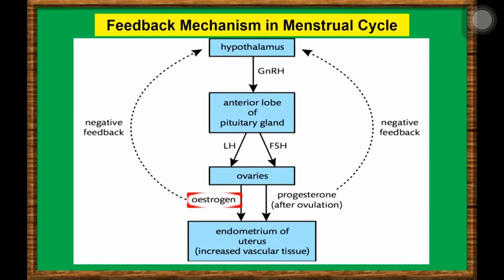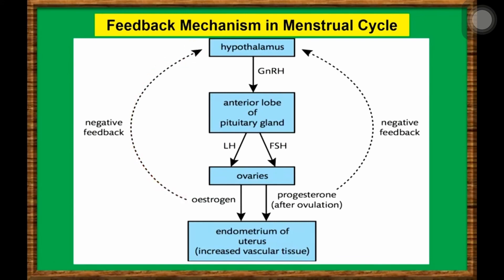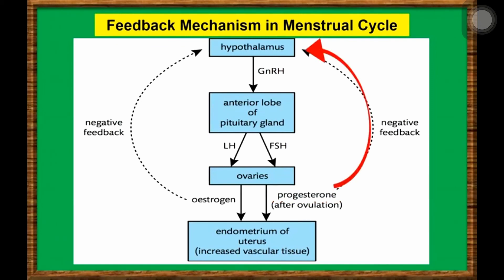Estrogen also stimulates the release of luteinizing hormone, or LH, from the pituitary gland, which in turn controls the production of progesterone. High levels of progesterone then inhibit or stop the further release of luteinizing hormone.